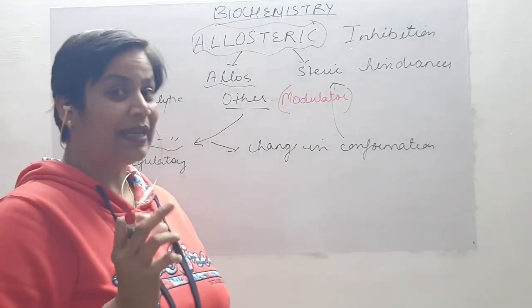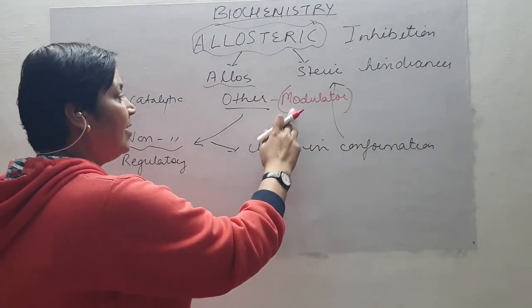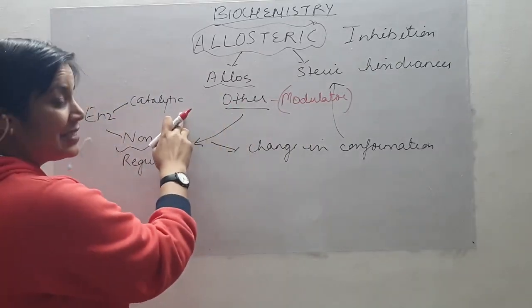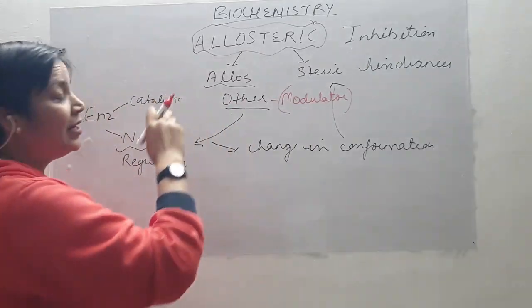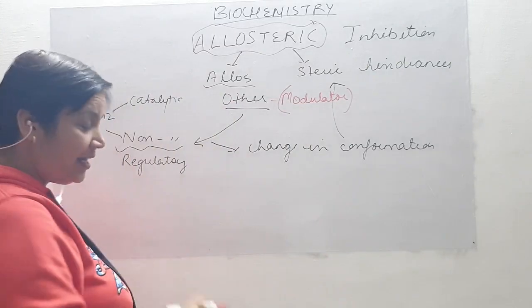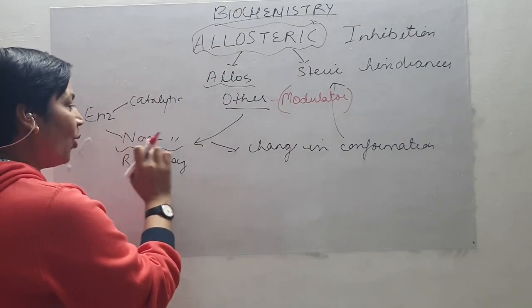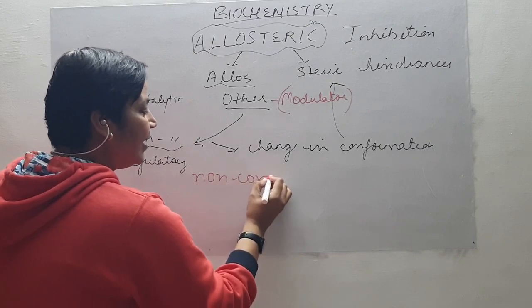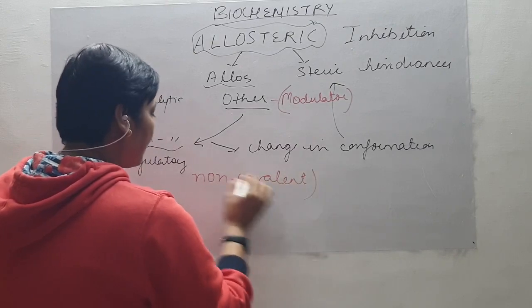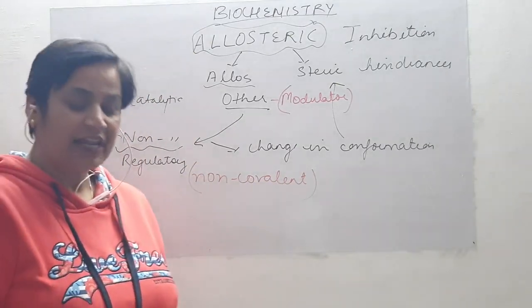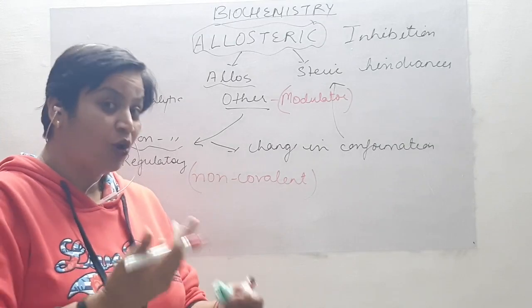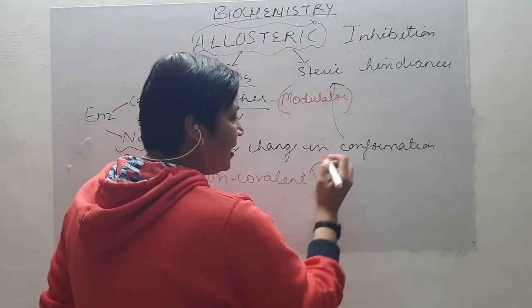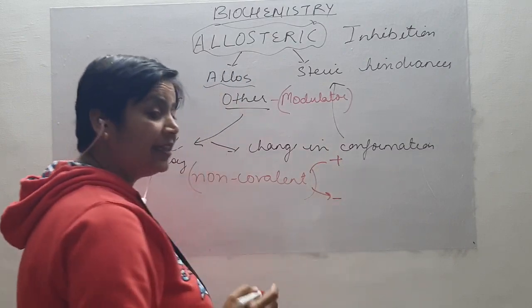We can define allosteric inhibition as the binding of a modulator to a site totally different from the catalytic site, which is known as the non-catalytic site. The type of interaction will always be non-covalent.